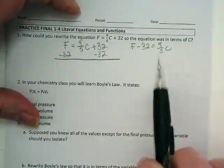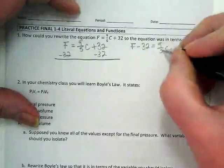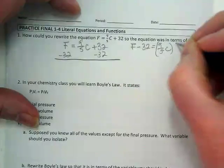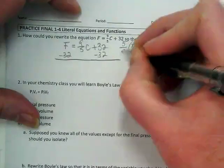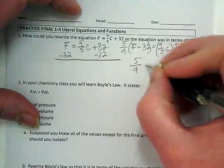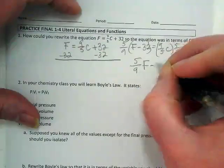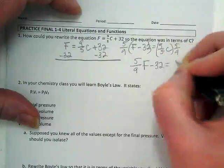To get the C by itself, I want to multiply by the 9 fifths reciprocal, which would be 5 ninths. So I end up with 5 ninths Fahrenheit minus 32 is equal to Celsius.